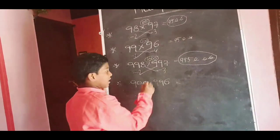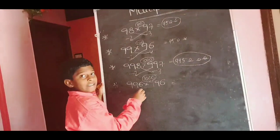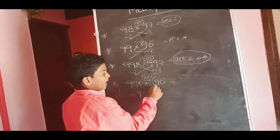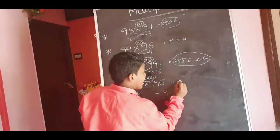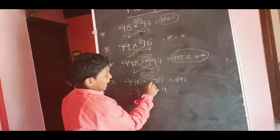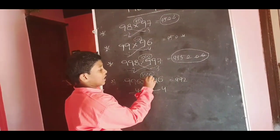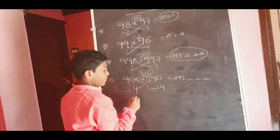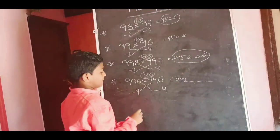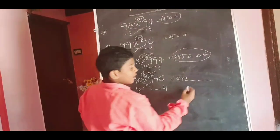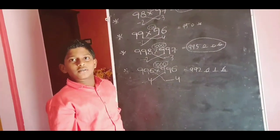Next: 996 into 997. This is nearest to 1000. 996 minus 4; 997 minus 3. 996 minus 3 equals 993. 997 minus 4 equals 993. For 1000, three zeros means three digits. After, minus into minus is plus: 4 into 4, 4 fours are 16, means 016. The answer is 993016. Thanks! For more videos, please subscribe and click the bell icon.